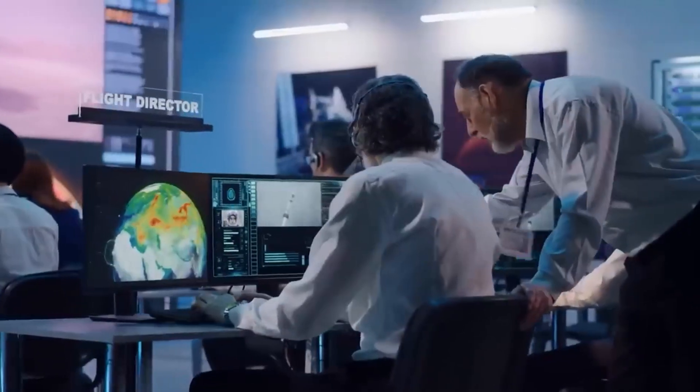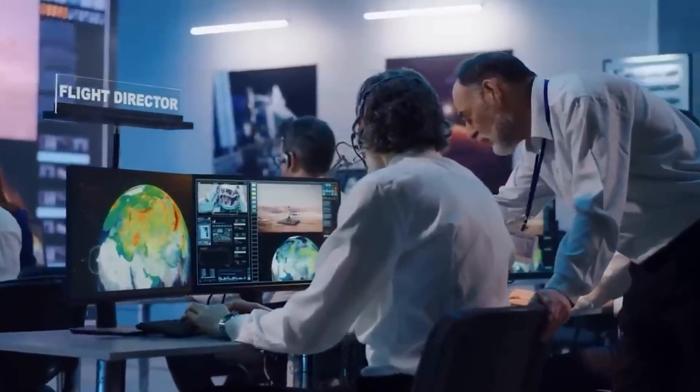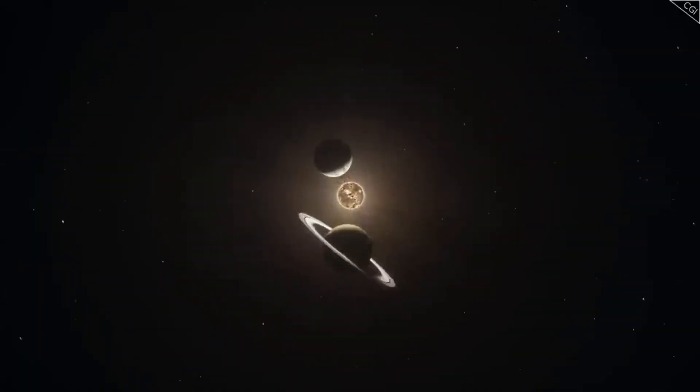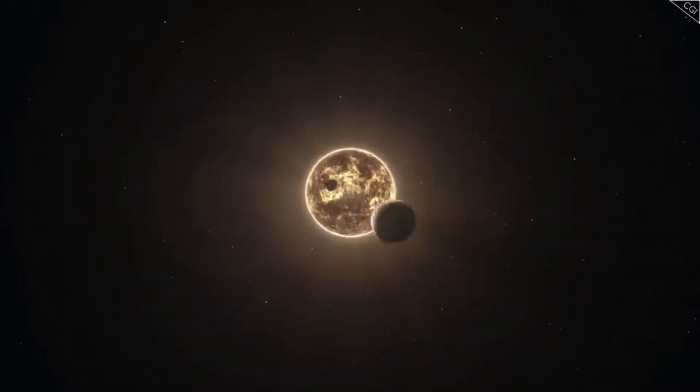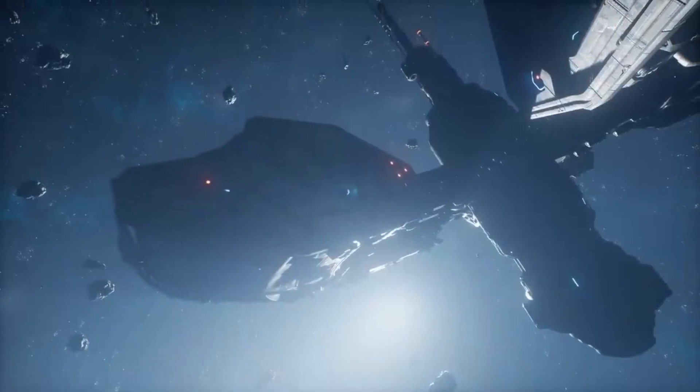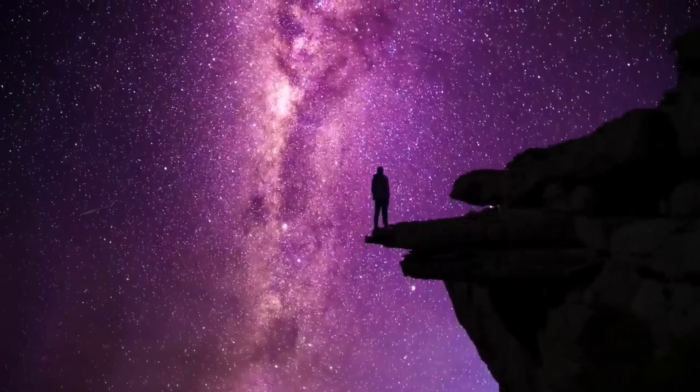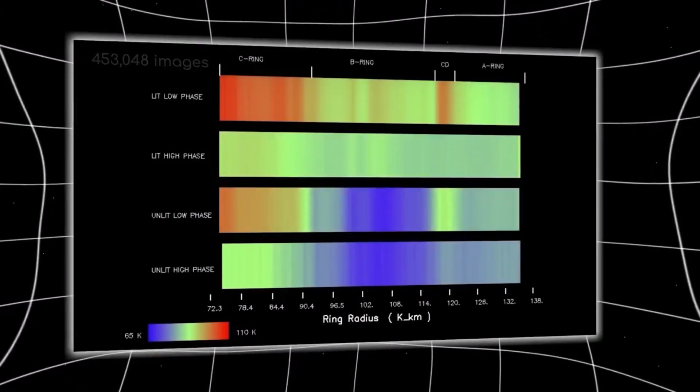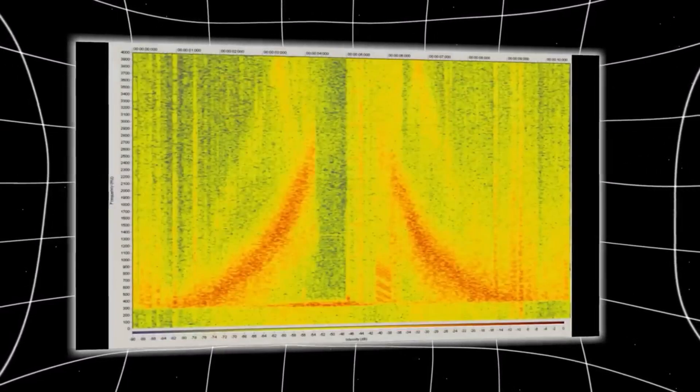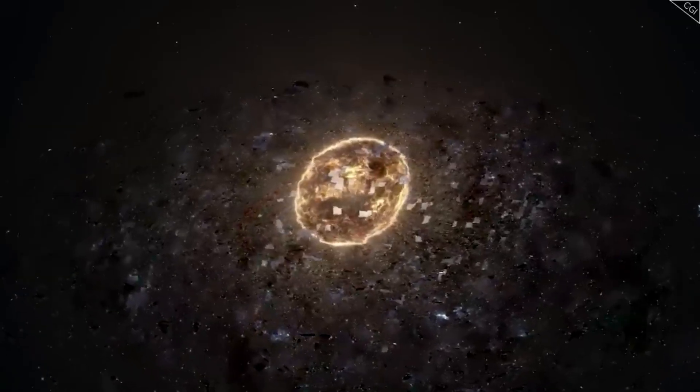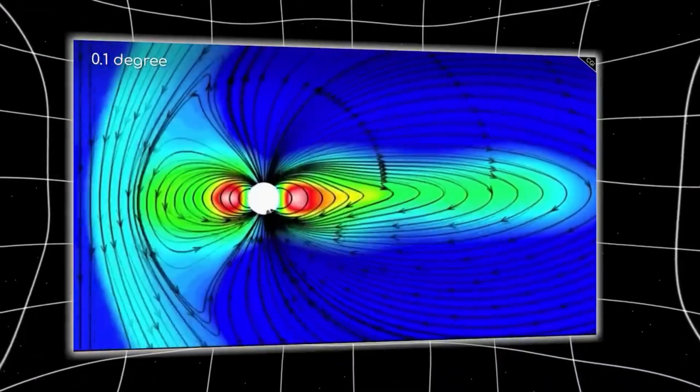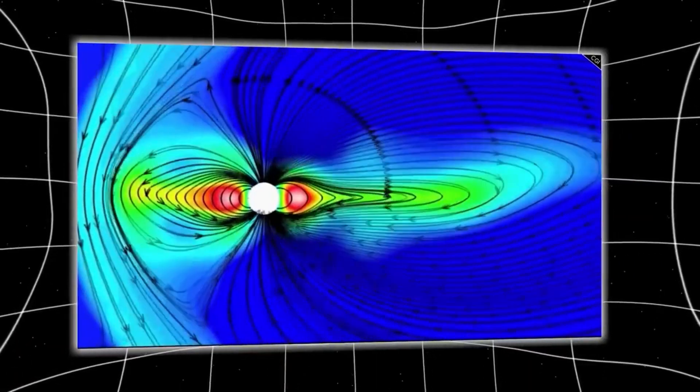Scientists are also using this opportunity to test and improve our techniques for studying interstellar objects. Every piece of data they collect from 3i/Atlas will help them be better prepared when the next interstellar visitor arrives. And make no mistake, there will be more. Astronomers estimate that objects from other star systems probably pass through our solar system fairly regularly, but most of them are too small or too dark for us to detect.